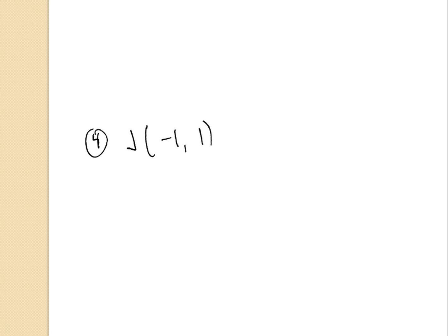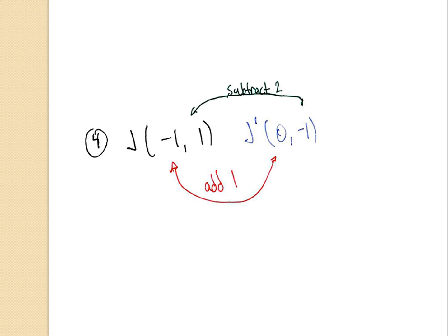Now that everyone has number three written down, let's take a look at number four. Number four asks us about point J and gives us several ways we could transform J as answer choices. J prime is zero comma negative one. If this was a rotation around the origin, I know it cannot give us J prime, because the numbers are not consistent with that. If I look at X, I see that I've added one. And if I look at Y, I see that I've subtracted two. That leads me to understand it's only one transformation that could give us that J prime, and that is a translation of one right and two down — that's the vector. Pause the video and make sure everyone has this written on their paper.